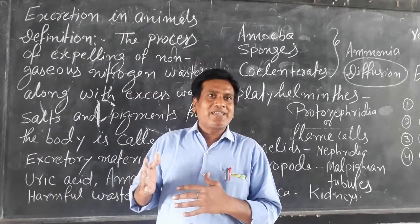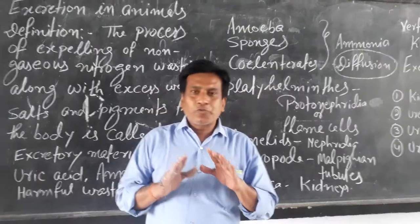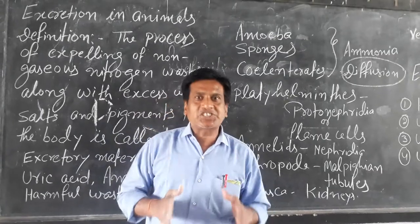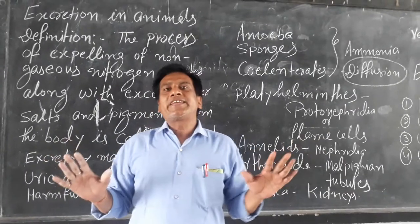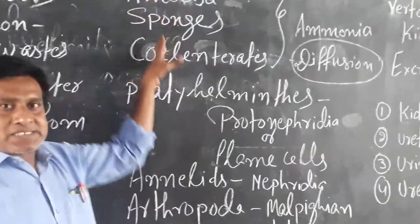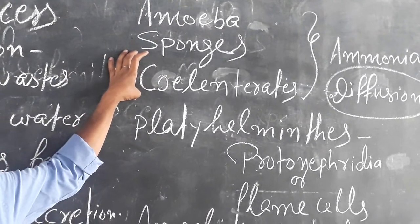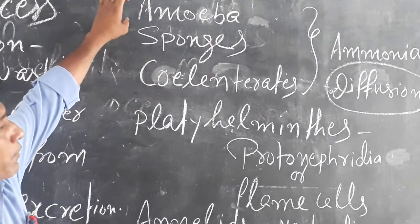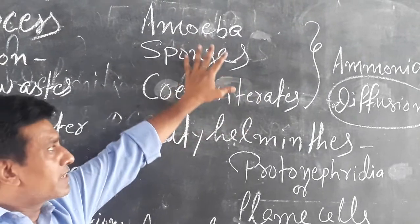Excretion removes waste material from our body. Especially in lower groups of organisms, there is no specialized organ for this purpose. For example, amoeba has no special organ for excretion. There are no skeletal organs present in this group of organisms because amoeba belongs to protozoa, and they belong to Porifera.